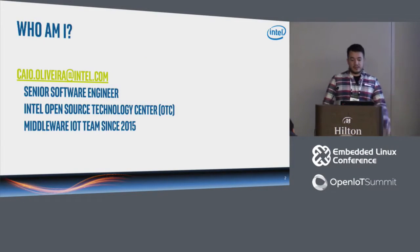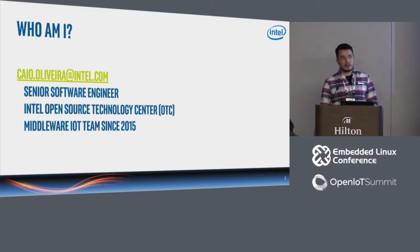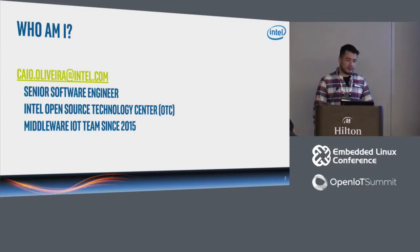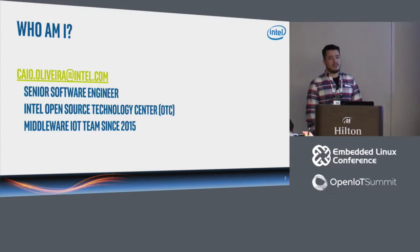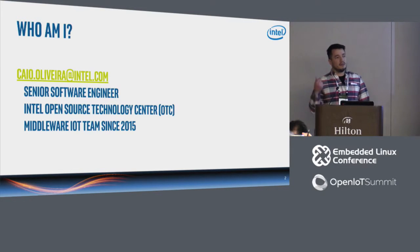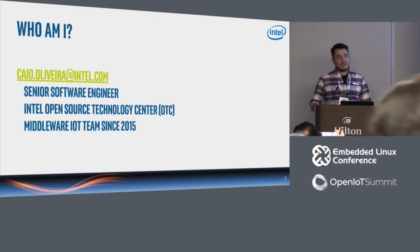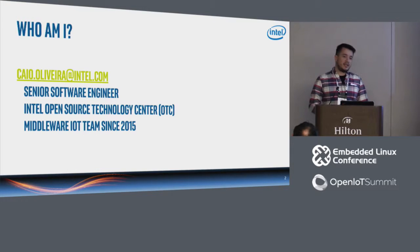I'm Caio Oliveira. I'm a software engineer. I've been making software since around '97, but professionally I've been working since 2007. I work now for Intel, Open Source Technology Center. For the last two years I've been working with IoT — middleware for IoT. Started with smart home, but now I'm looking at industrial.